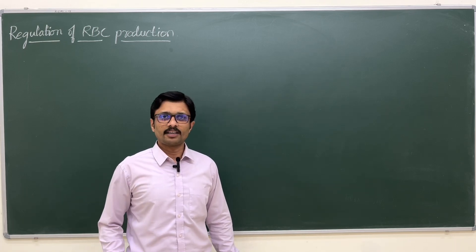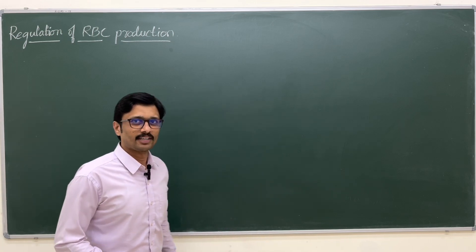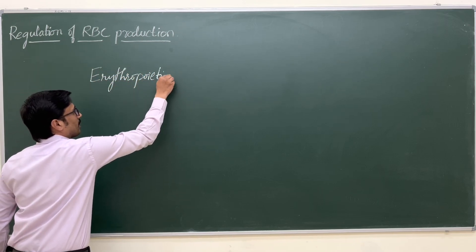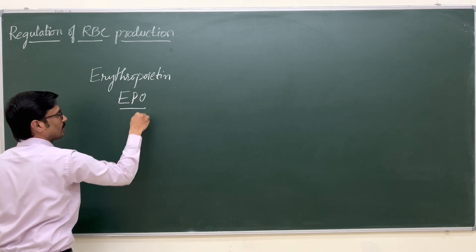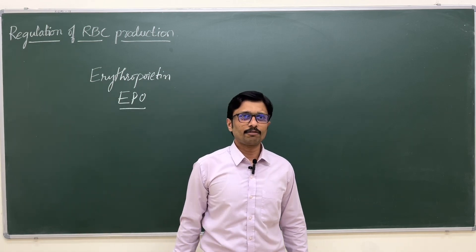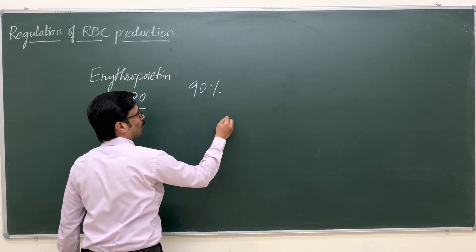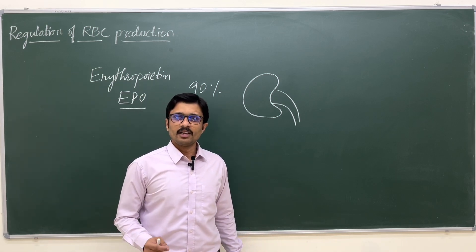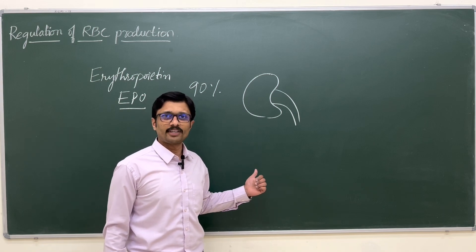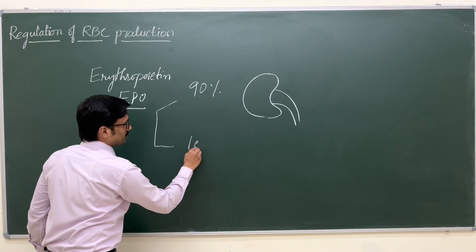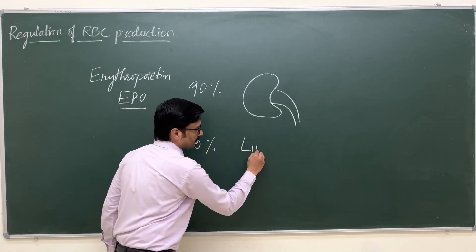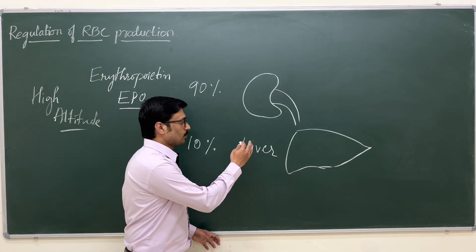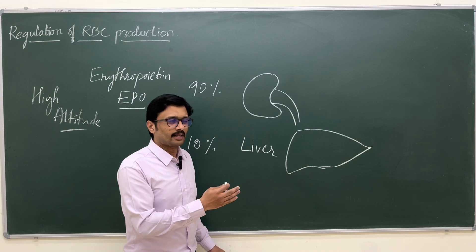The first important factor that regulates erythropoiesis is the hormone erythropoietin, in short form EPO. This hormone is mainly secreted from the kidneys — 90% of erythropoietin is secreted from the kidneys, which also act as an endocrine organ. The remaining 10% of erythropoietin is secreted from the liver.